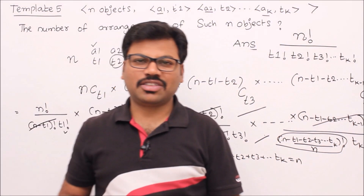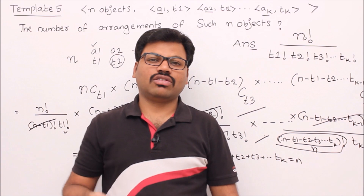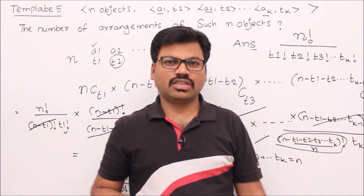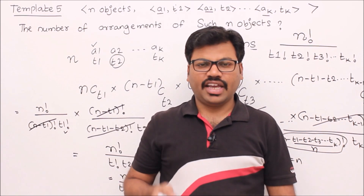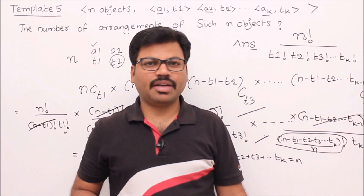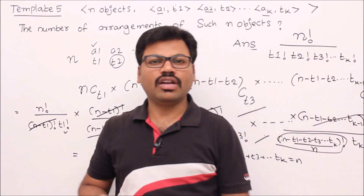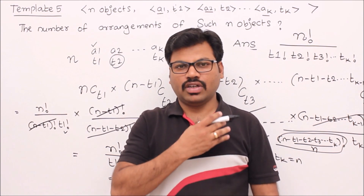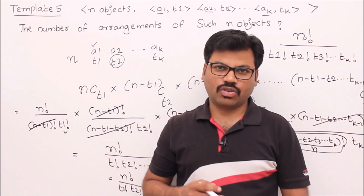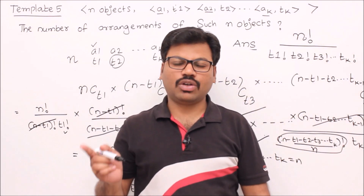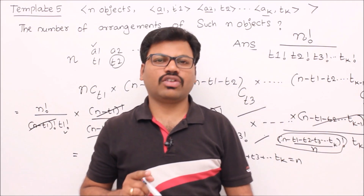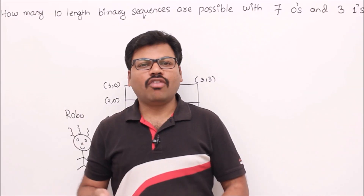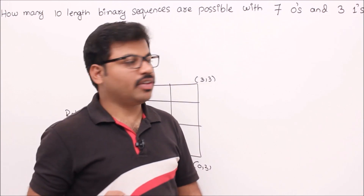So template number 5 is: you have n objects where objects may not be distinct, a1 type repeated t1 times, a2 repeated t2 times, and so on up to ak repeated tk times. The total number of arrangements equals n factorial divided by t1! into t2! into t3! and so on into tk factorial. Now we will see problems related to template number 5.